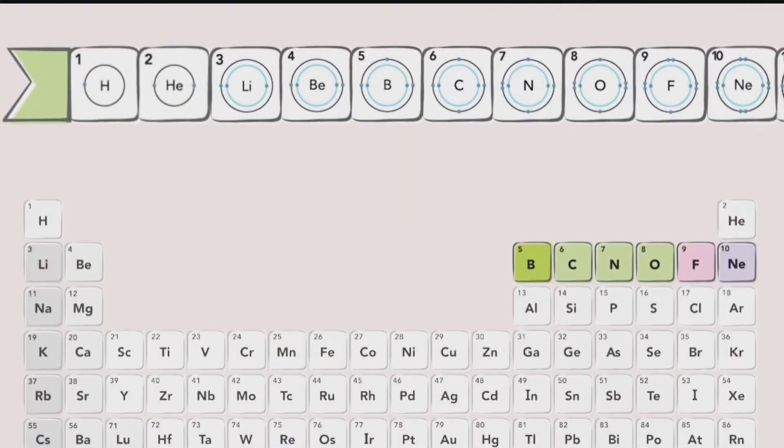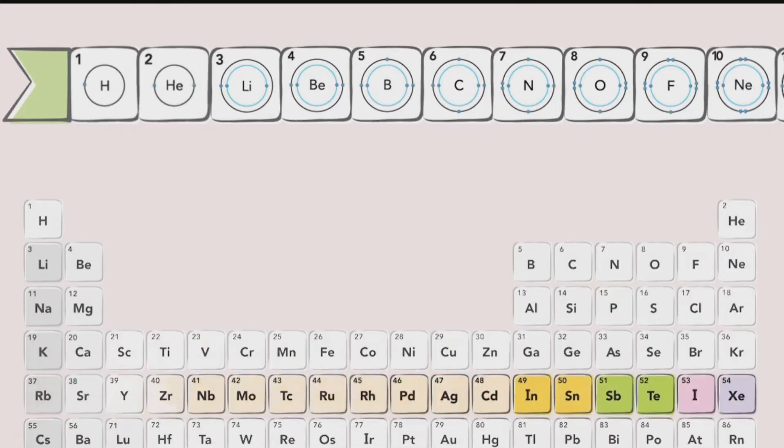The rows, or periods, on the periodic table correspond to the energy levels of each element's electrons. When the maximum number of electrons possible at an energy level is met, a new period begins.